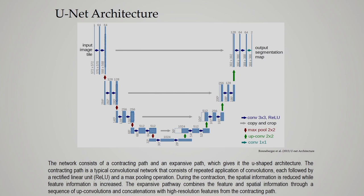Why is it called UNET? Because if you see the structure, it is shaped like the letter U. The network has two parts: one is the contracting part and another is the expansive part. Looking at the structure, this part is the contracting part and the second part is the expansive part.